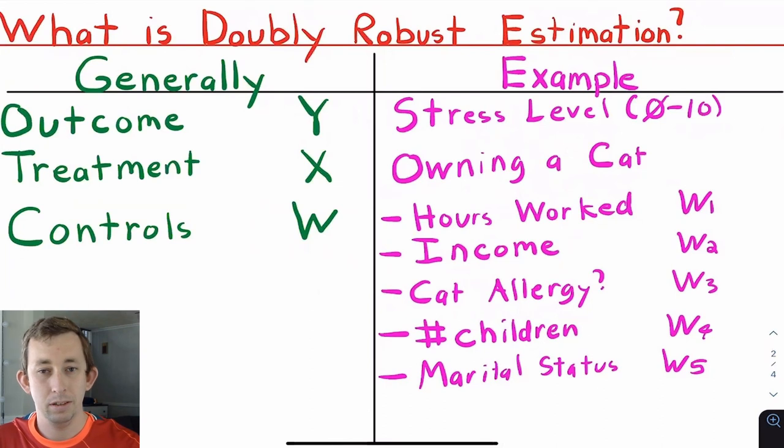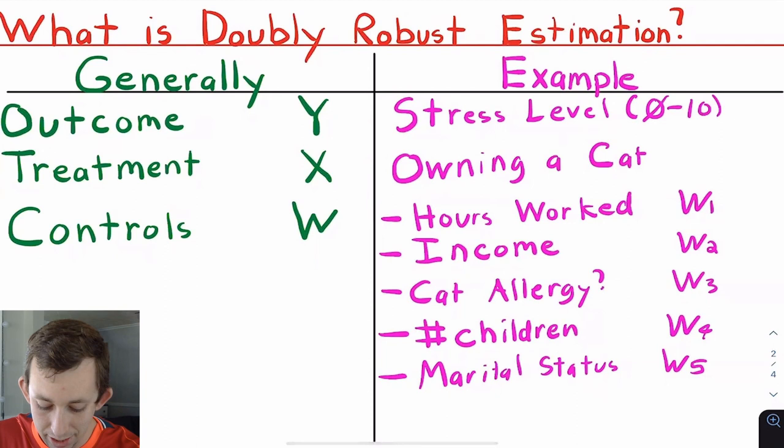Generally, when we're talking about OLS, we're talking about an outcome variable Y, a treatment variable X, and a set of controls W. So using the examples that we've been talking about in these videos so far, our Y variable has been your stress level from 0 to 10. Your X variable or treatment variable has been whether or not you own a cat. And your control variables that we've talked about are stuff like hours worked, your income, whether or not you have a cat allergy, how many children you have, and your marital status. This is just helpful, so as we talk about how exactly we do doubly robust estimation, you can either keep the more generic forms of these variables in mind or you can think about the example that we've talked about in previous videos.